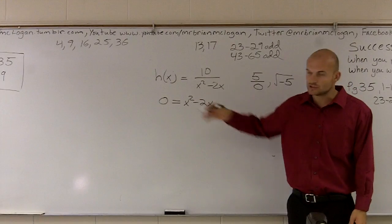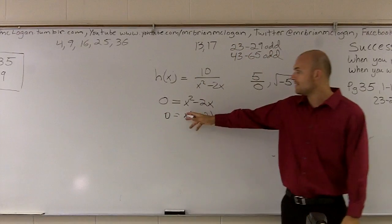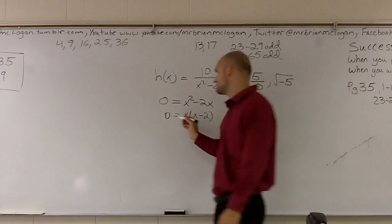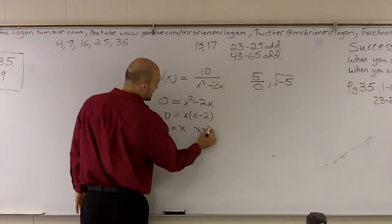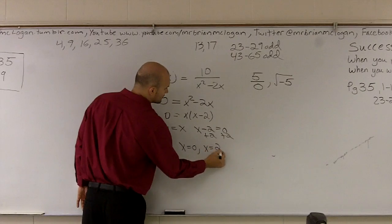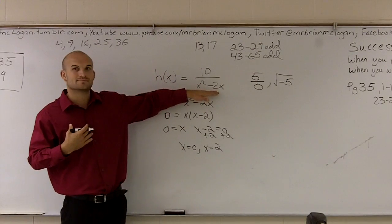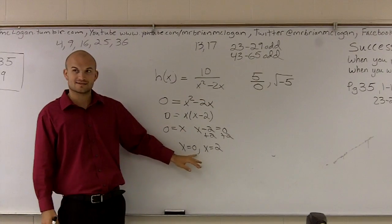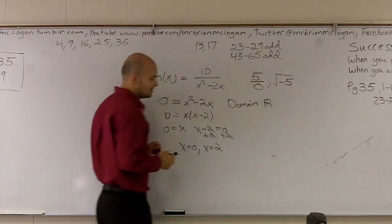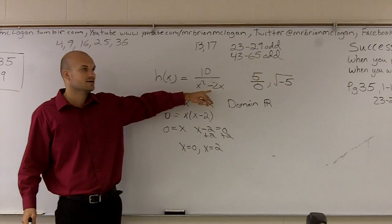I look at it and say what can be factored out. Since they both share an x, I'm going to factor out an x. Now I have this as a set of linear factors. So I can say x equals zero, or x minus 2 equals zero. Whichever one gives me a zero — so x equals zero or x equals two. When x equals zero or when x equals two, that's going to give me zero for my function — zero on the bottom. So when I write my domain, it's all real numbers except x cannot equal zero and x cannot equal two.